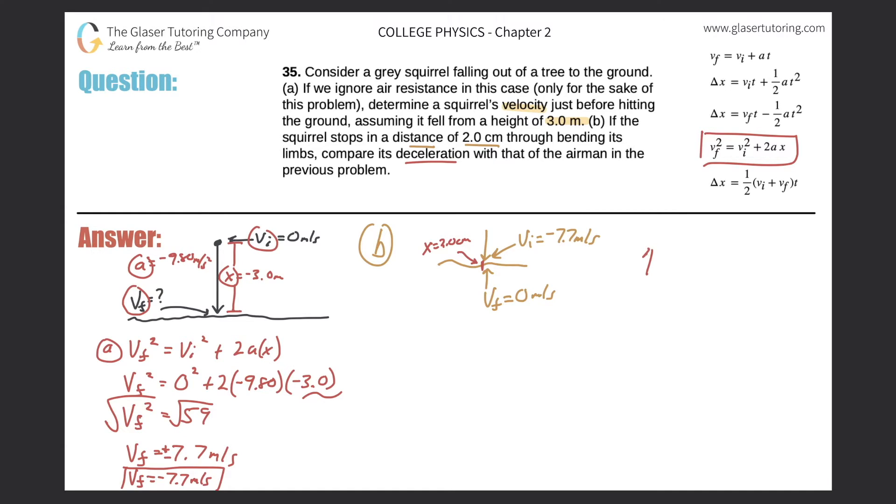First thing I notice, I need consistency in my units. I have centimeters in the displacement, but meters in my velocities. So I have to do a conversion first. Let's convert the 2 centimeters into meters. Centimeters on the bottom, meters on the top. For every 1 meter, there's 100 centimeters. We can do our conversion nicely now. 0.020 meters. I'm just going to write that up here. x is equal to 0.020 meters. Now I can do my calculations.